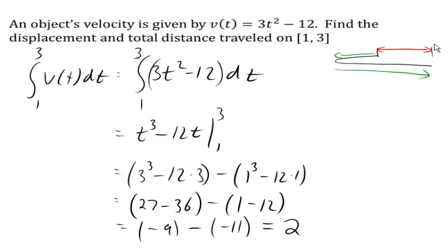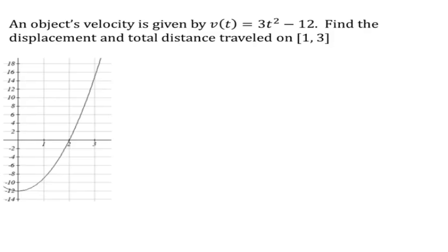Now let's look at total distance traveled. It might be helpful to look at a graph of our velocity function. We'll notice that my velocity starts negative but then turns positive.